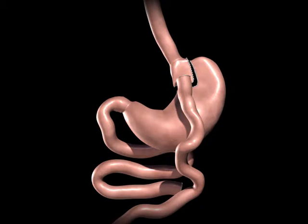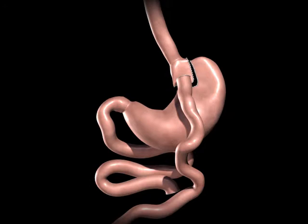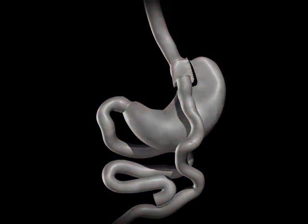Bypassing a portion of the small intestine decreases the absorption of calories and nutrients. The upper portion of the small intestine is reconnected to the lower portion of the intestine.